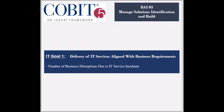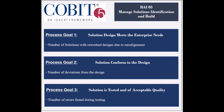The process supports one IT-related goal, which is to ensure that the delivery of IT services is aligned with the business requirements. The achievement of this goal is measured by the number of business disruptions due to IT service incidents, and by the percent of users satisfied with the quality of the IT services. The first process goal is to ensure that the solution design meets the enterprise needs, and its achievement is measured by the number of solutions with reworked designs due to not properly aligning with the enterprise requirements.